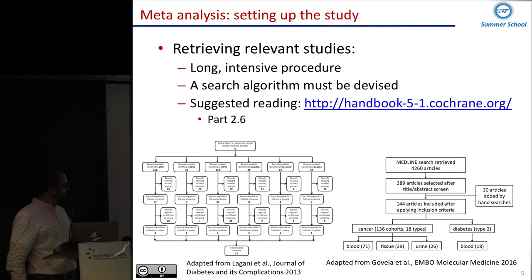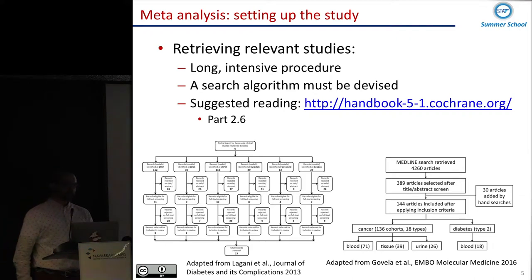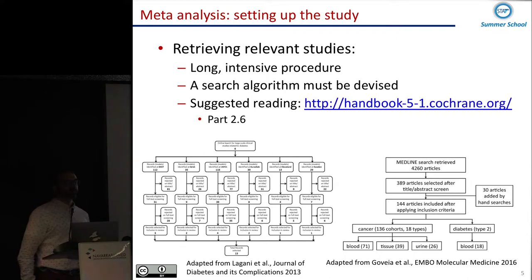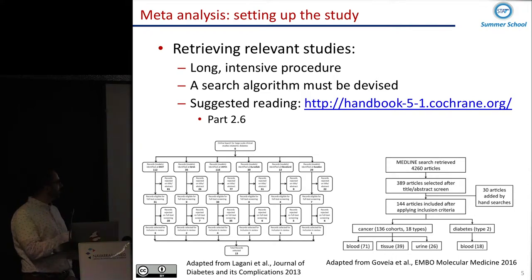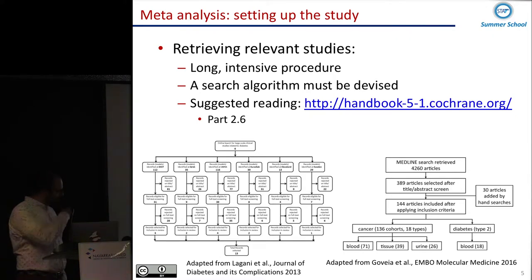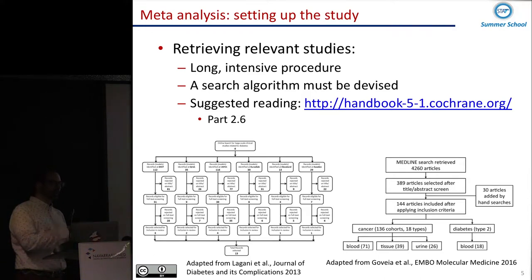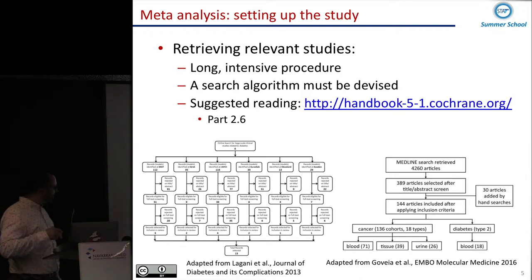Depending on what you want to do, it may be the case that you have to scrutinize thousands of articles. Or on the other hand, you may be attracted to something so rare that you only have two studies, and it's quite difficult to work with. In any case, this is the most important part of meta-analysis, because you must define your inclusion/exclusion criteria so that you can be sure whatever studies you include are comparable and consistent among themselves.